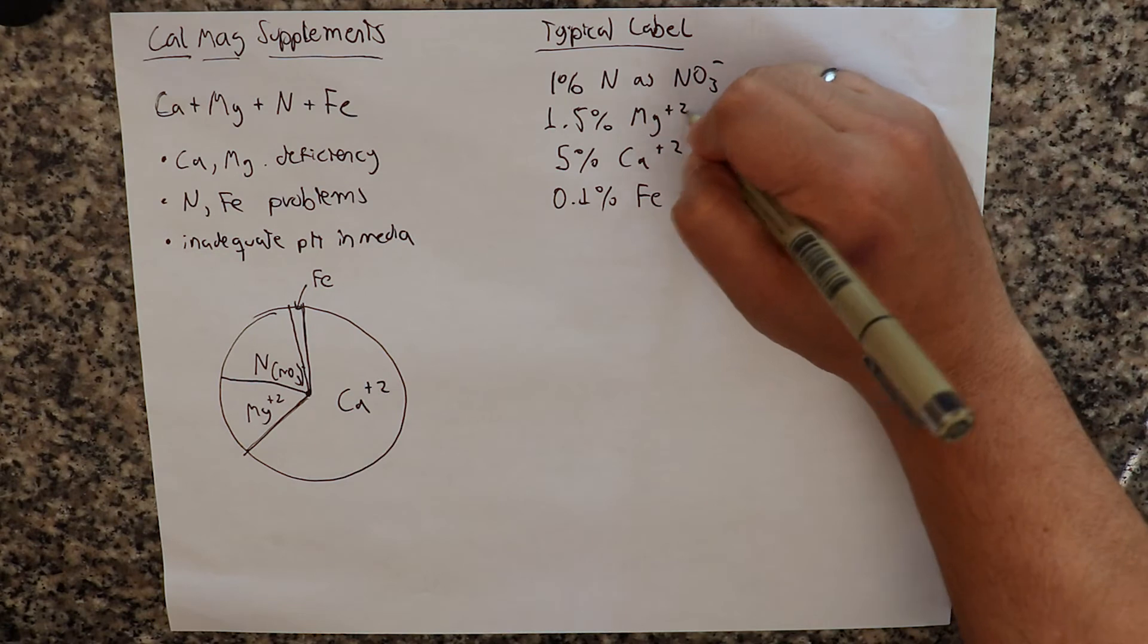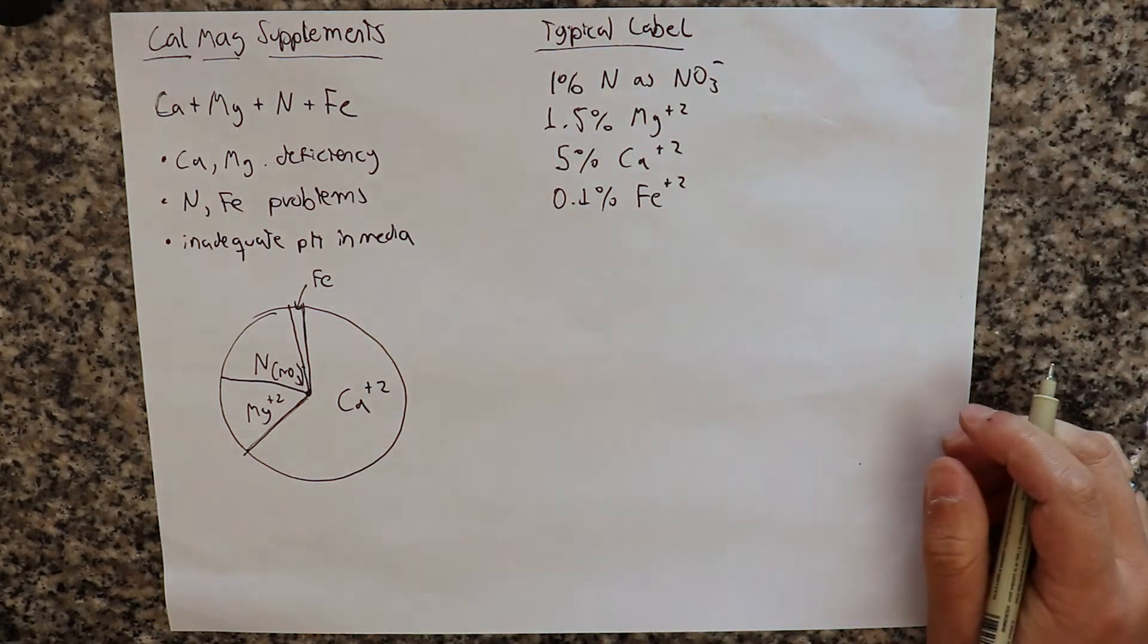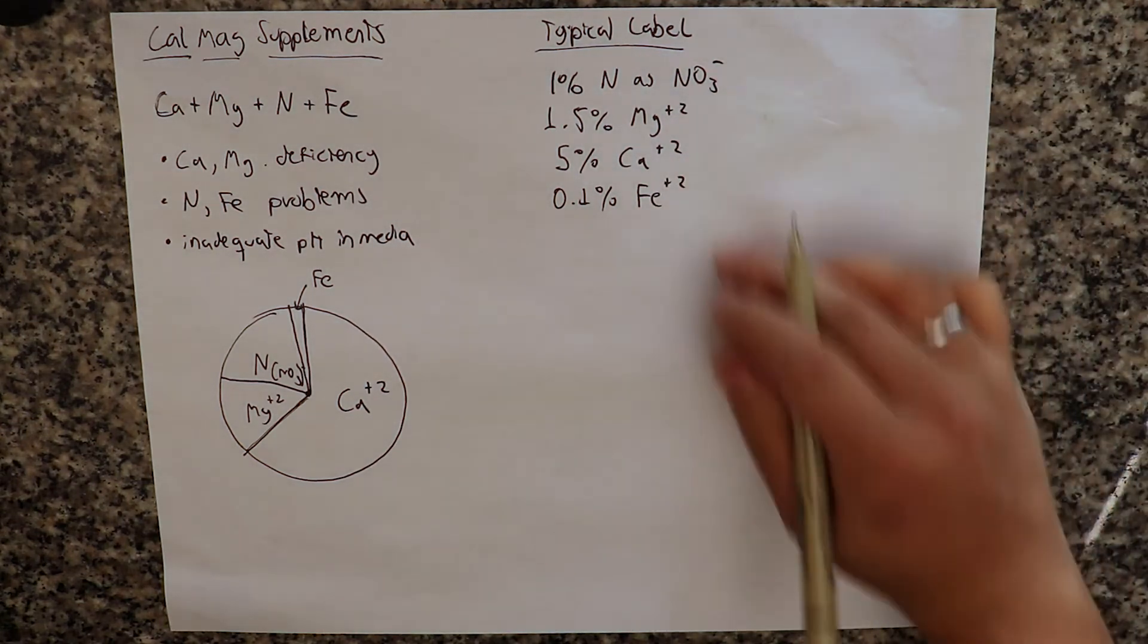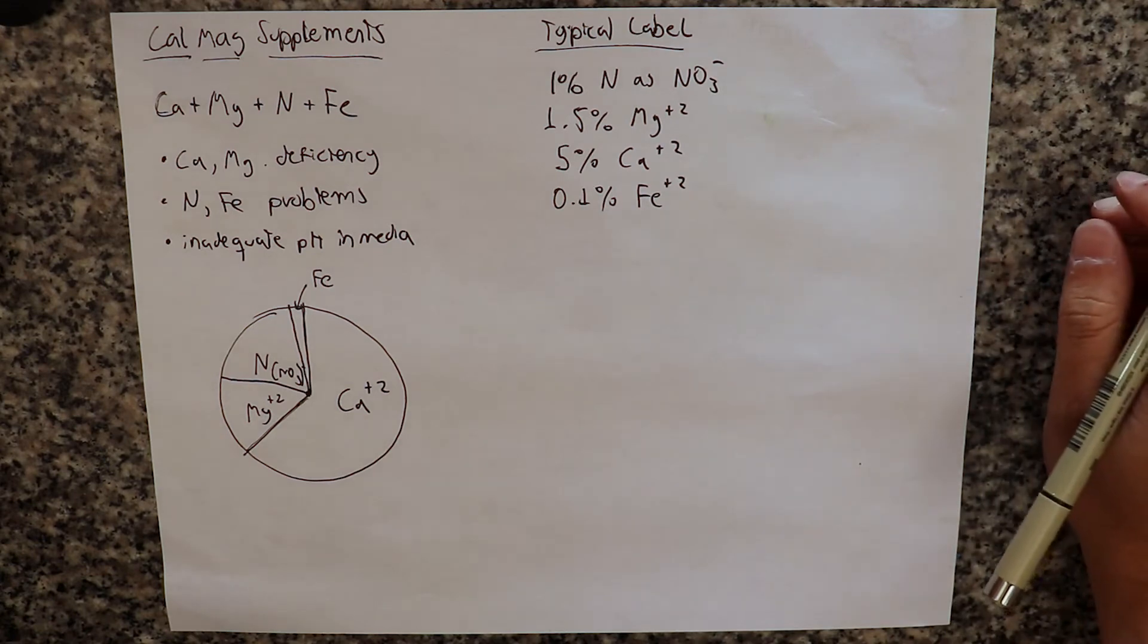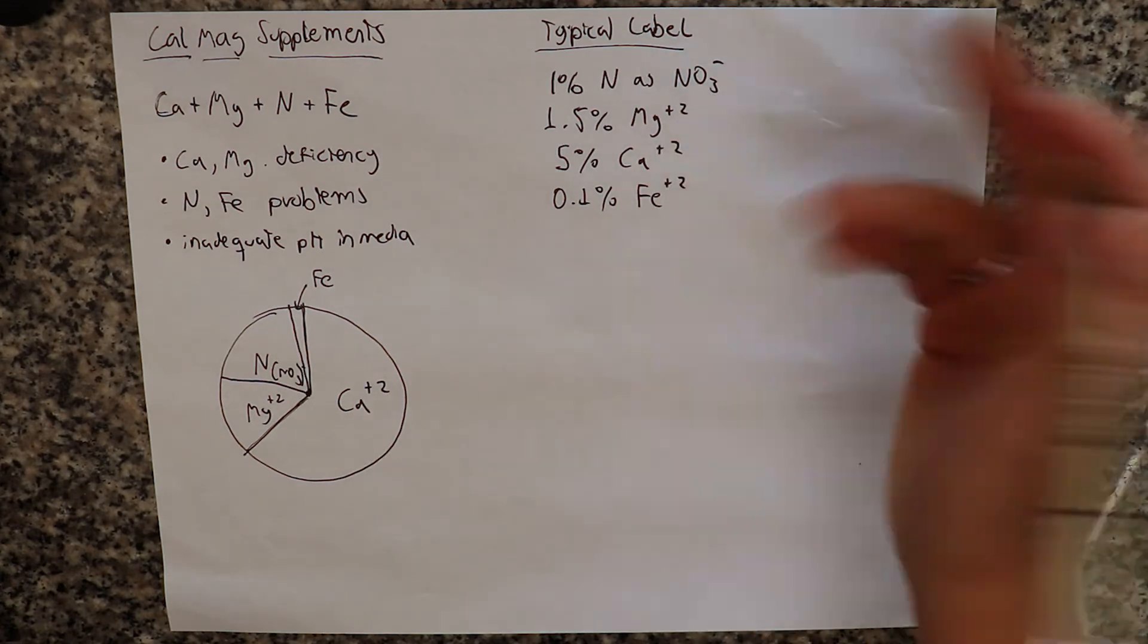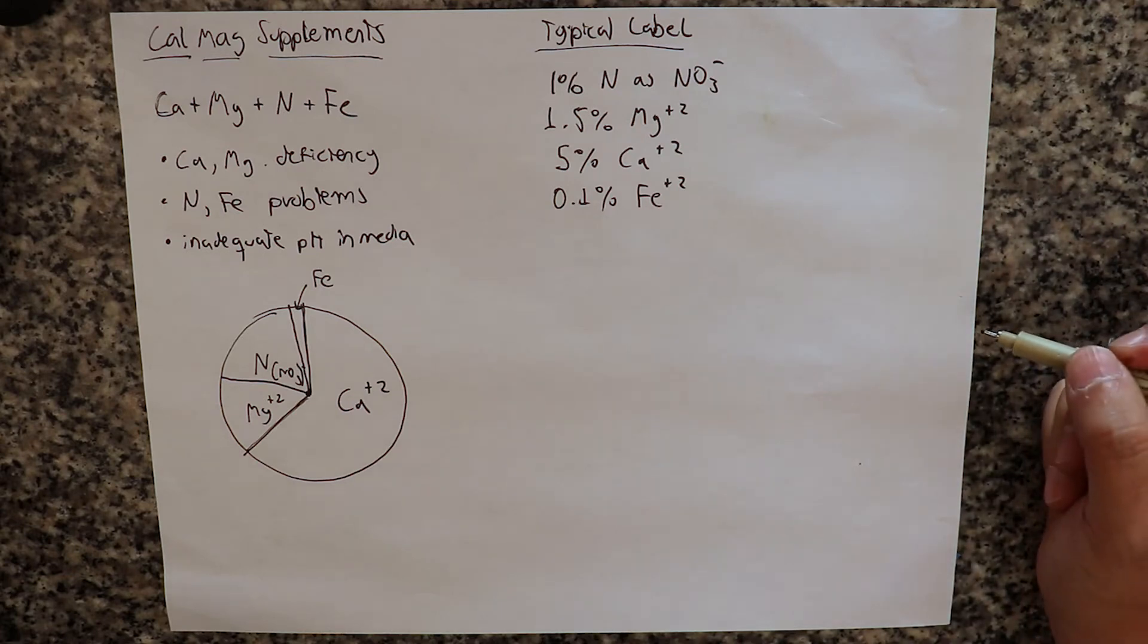And we have usually 0.1% as iron. So usually this is also magnesium +2, and this iron is iron +2. So this is the typical composition of a CalMag label. You'll find variations of this, but usually it's something like this in these proportions.